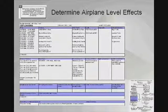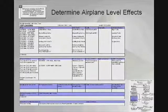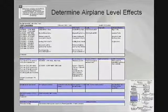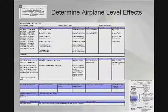Seen here is an example of the bundle section report. The bundle section report notes any installation guideline discrepancies that were found. In this case, this bundle contained power wires from different generators, in violation of OEM design principles.